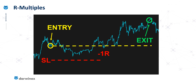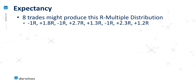Trades that close at the stop loss have a minus 1R value, but trades such as this one have positive R values based on the multiple of the price difference. So as you can see in this particular case, this is about 1.8R. Moving on from this, we can analyze multiple trades to put together what's called an R-multiple distribution. Here we have eight example trades, and three of those, because of their R values, we know closed out at their stop loss. The other five were profitable trades with values of 1.8R, 2.7, 2.3, 1.2, and 1.3.